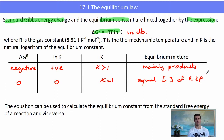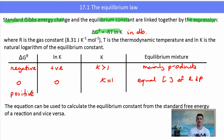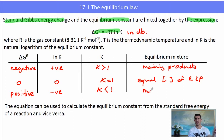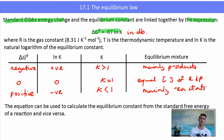If we have a positive delta G, ln K will be negative and K will be less than 1, meaning the equilibrium lies mainly towards the reactants. The equation can be used to calculate the equilibrium constant K from the standard free enthalpy of a reaction, or vice versa, and the IB might ask you to do either.